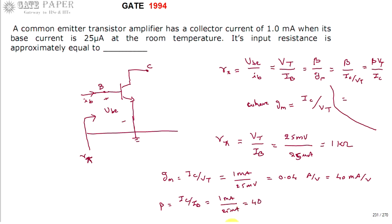So then you are calculating rpi equals beta by gm. 40 divided by 40 milli ampere per volt. That is 1 kilo ohm. Again you will get the same. But it is better to use vt by ib. So the answer for this question is 1 kilo ohm. Thank you.